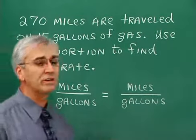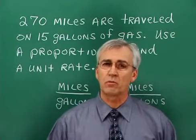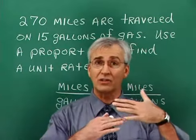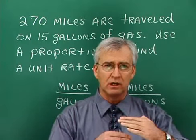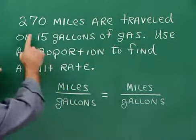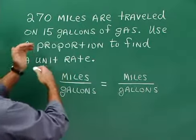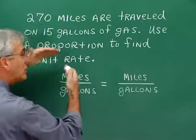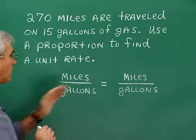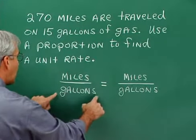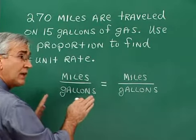In this problem we want to use a proportion to find a unit rate. We found unit rate using a different method before — simply reducing a fraction — but here we want to use a proportion. It's important with proportions to have the same sense on both sides of the equation, meaning the same unit structure in the fraction on the left and right sides. The problem says 270 miles are traveled on 15 gallons of gas; use a proportion to find a unit rate. We set up miles over gallons on both sides before introducing any numbers.